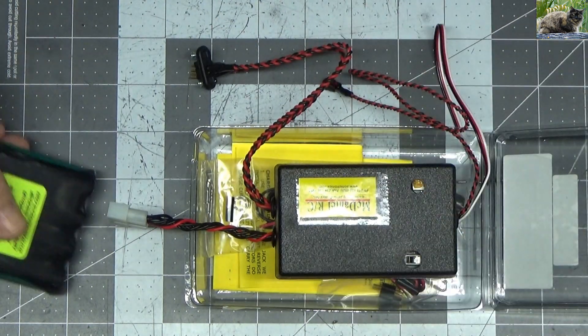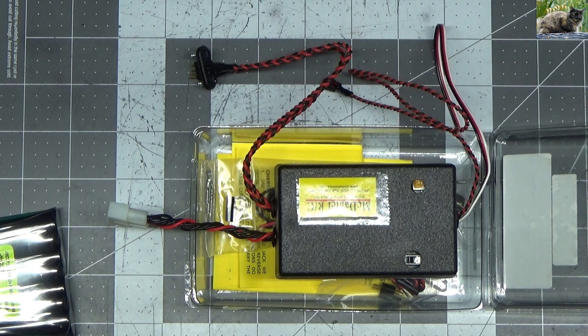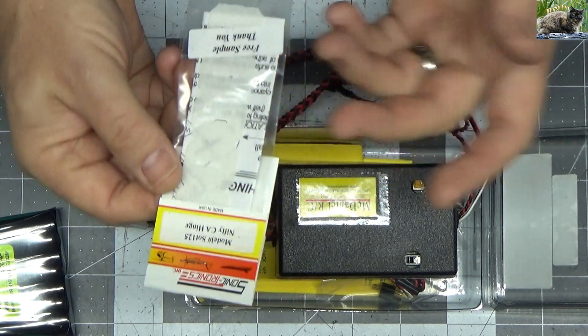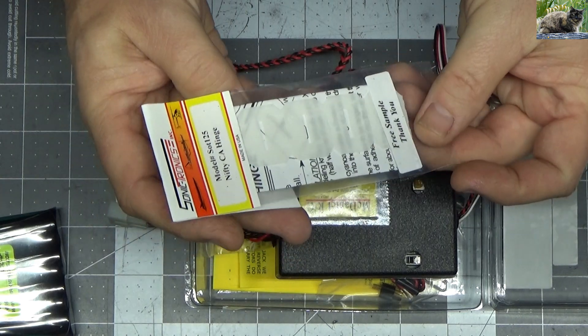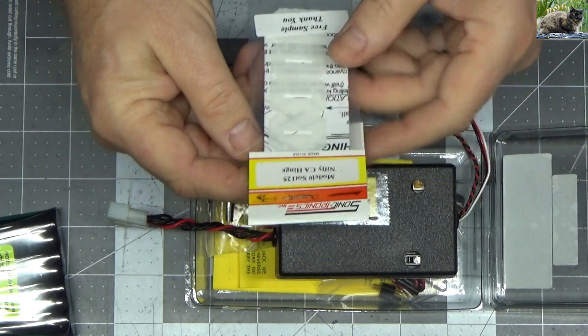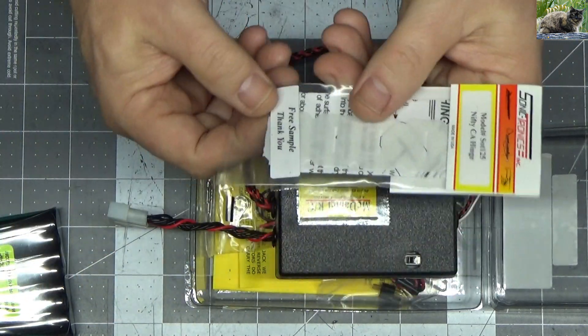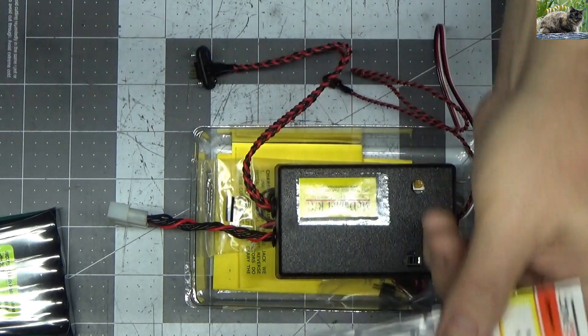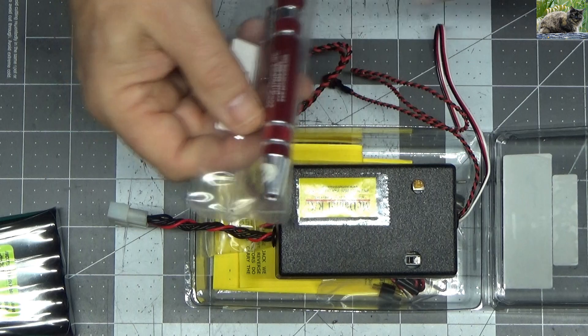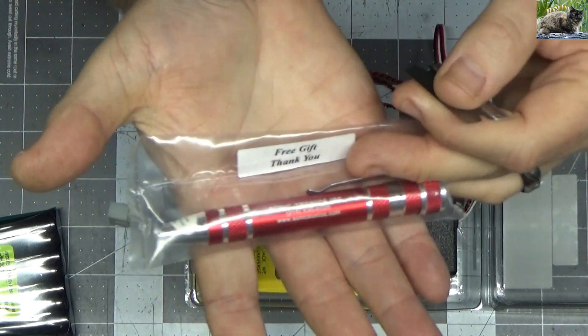But the thing that's so cool about SonicTronics is they always give you extra stuff. Like this is just some CA hinges and you usually always get a little package of CA hinges whenever you order anything from them. It says free sample, but today there was actually this little item in here and it says it's a free gift and thank you.